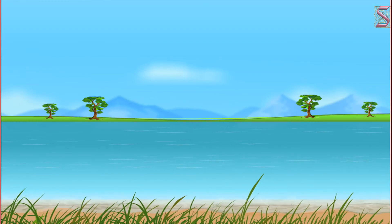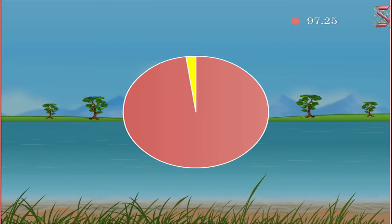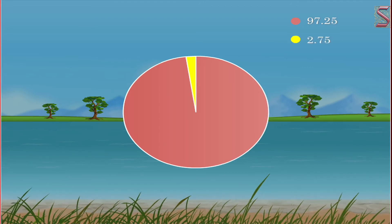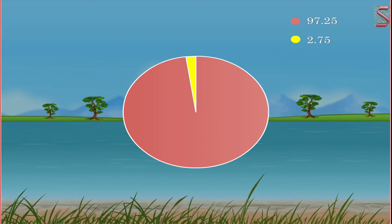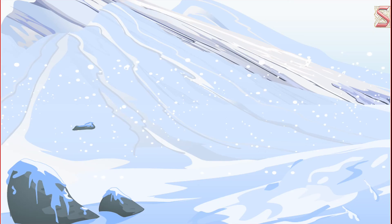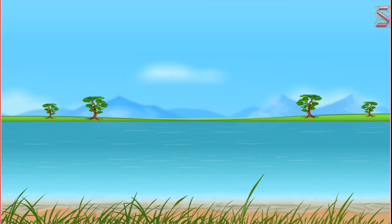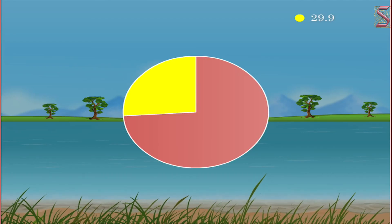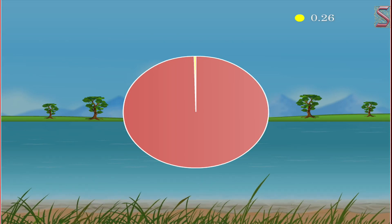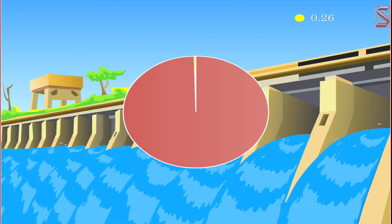Now, let us learn about water sources. When it comes to the sources of water, around 97.25% of the water is saline ocean water, while only 2.75% is freshwater. The major portion of freshwater — around 68.7% — is present in the form of ice and permanent snow cover in the regions of Antarctica, the Arctic, and mountain regions. Only the remaining 29.9% is available as fresh groundwater. Around 0.26% of the total freshwater is present in lakes, reservoirs, and river systems.